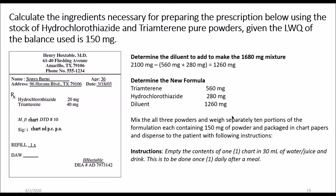Mix all ingredients homogeneously using geometric dilution. Once you have a homogeneous mixture, weigh 10 separate portions of 150 milligrams of powder each, package in chart papers, and dispense to the patient. We only package 10 portions because the prescription requires 10 doses — but we made 14 to account for loss during compounding.